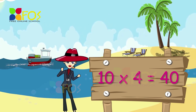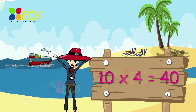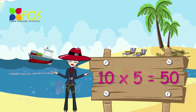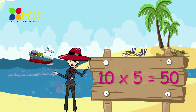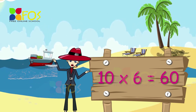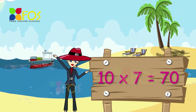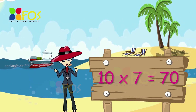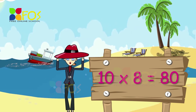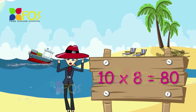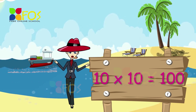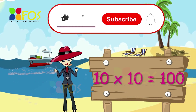Ten fours are forty. Ten fives are fifty. Ten sixes are sixty. Ten sevens are seventy. Ten eights are eighty. Ten nines are ninety. Ten tens are hundred.